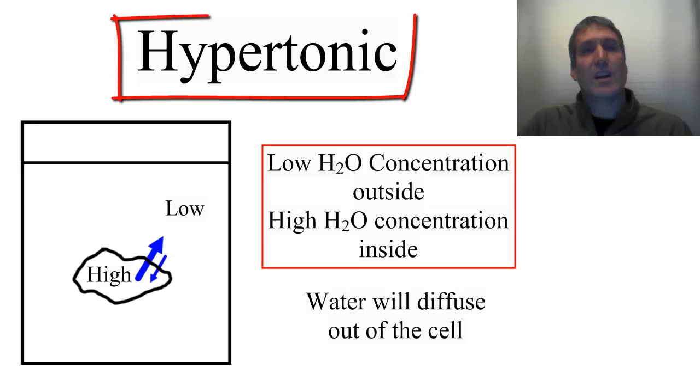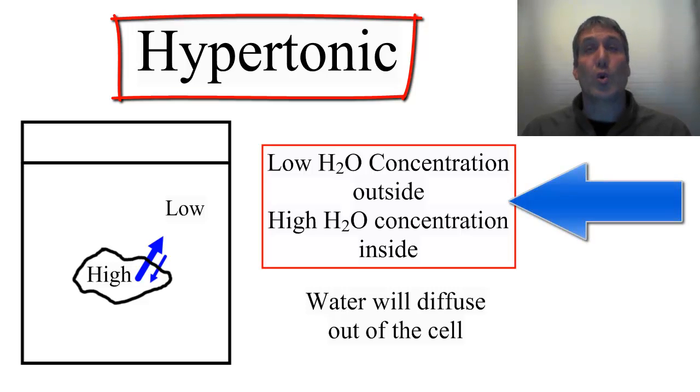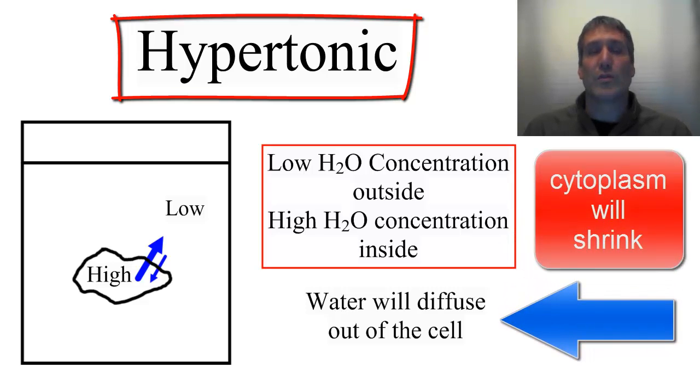The last type of environment is a hypertonic solution. I'm getting smaller, hypertonic, because there's a low concentration of water outside and a high concentration of water inside. This means that water will diffuse out of the cell, causing the cytoplasm to shrink.